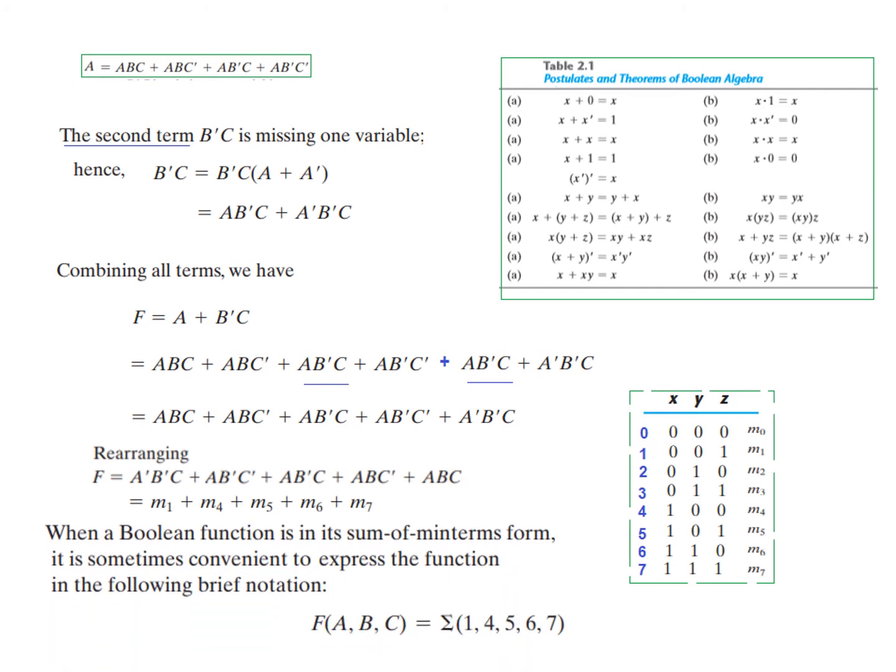Now there is a shortcut way when a boolean function is sum of minterms form. It is sometimes convenient to express the function in the following brief notation. So we are just writing that the function has three variables ABC and its values is 1, 4, 5, and 6.